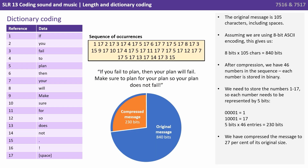The original message is 105 characters, including spaces. Assuming we're using 8-bit ASCII encoding, this gives us 8 bits times 105 characters, or 840 bits. After compressing, what we have is 46 numbers in the sequence. Each number is stored in binary — we need to store the numbers 1 to 17, so each number needs to be represented by 5 bits. That's 5 times 46 entries, which is 230 bits.